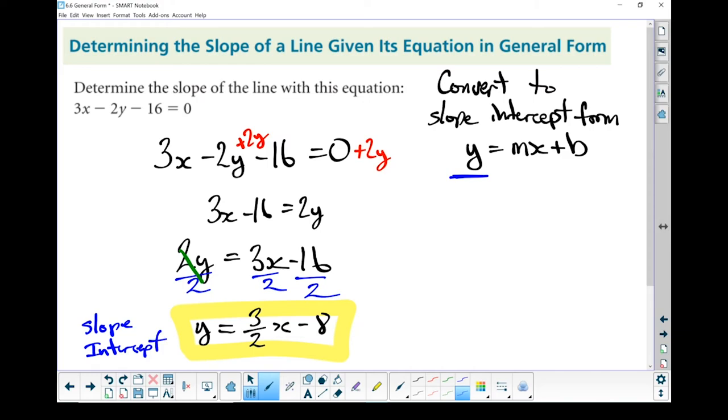Once I've got my slope-intercept form, all I need to do is pull out the m piece, and I've got my slope, and it's sitting right there. So slope equals 3 halves. That is my end answer.